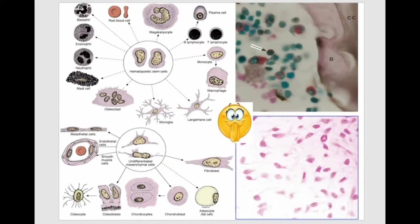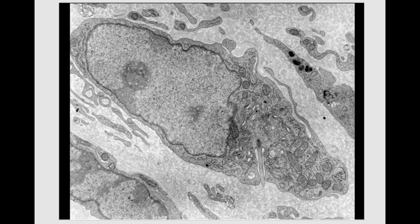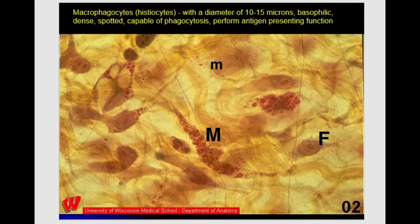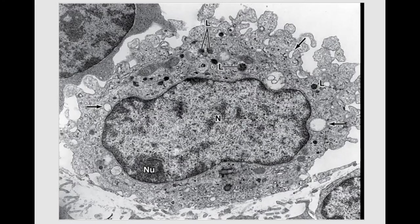Now let's look at macrophages — also called histiocytes — the next type of cell in connective tissue. Macrophages are large cells, about 10–15 microns in size, with an irregular shape and a large nucleus. They have many lysosomes in the cytoplasm at different stages of maturation — primary, secondary, and sometimes residual bodies. The peripheral part of the cytoplasm and the cell membrane of macrophages has many evaginations, forming folds, indicating the functional activity of the plasma membrane.